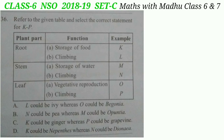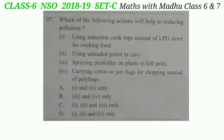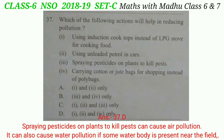The correct answer is option A — L could be ivy, whereas O could be begonia. Question 37: Which of the following actions will help in reducing pollution? Statement I — using induction cooktops instead of LPG stoves for cooking food — is correct. Statement II — using unleaded petrol in cars — is also correct. Statement III — spraying pesticides on plants to kill pests — is incorrect. Statement IV — carrying cotton or jute bags for shopping instead of polybags — is also correct. So the correct answer is option D — I, II, and IV only.